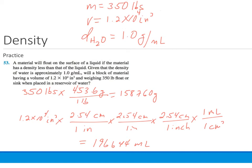So we've got the mass, we've got the volume. We can take density equals mass over volume. So if I take the mass of 158,760 grams over 196,644 milliliters, the density of the object is 0.8073 grams per milliliter.